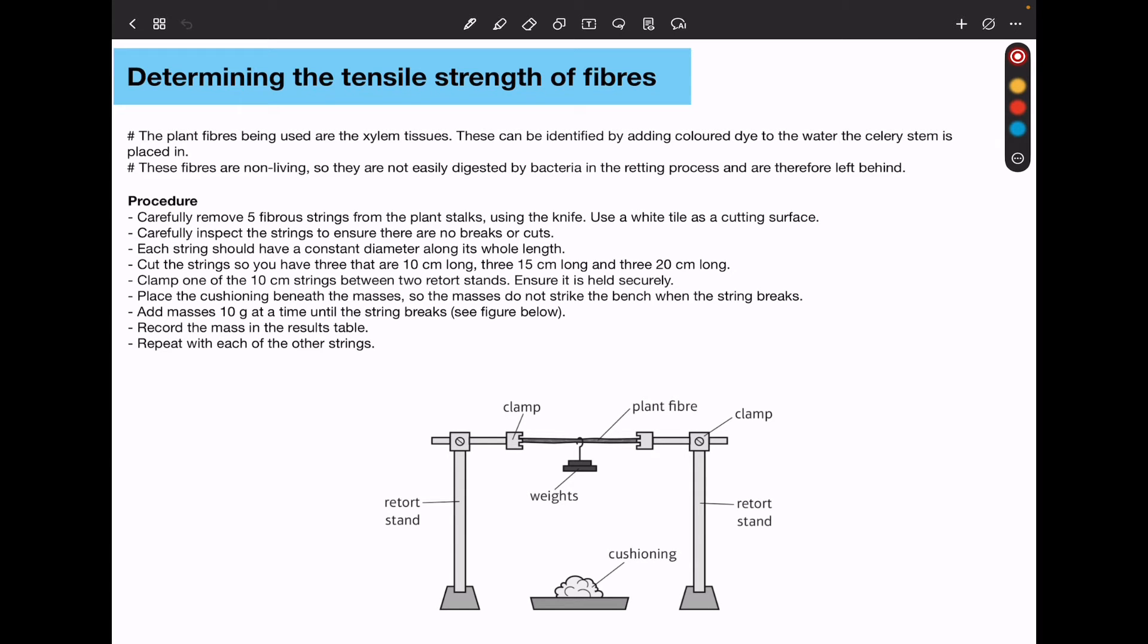Carefully remove five fiber strings from the plant stalks using a knife. Use a white tile as a cutting surface. Carefully inspect the strings to ensure there are no breaks or cuts. Each string is going to have a constant diameter along its length.